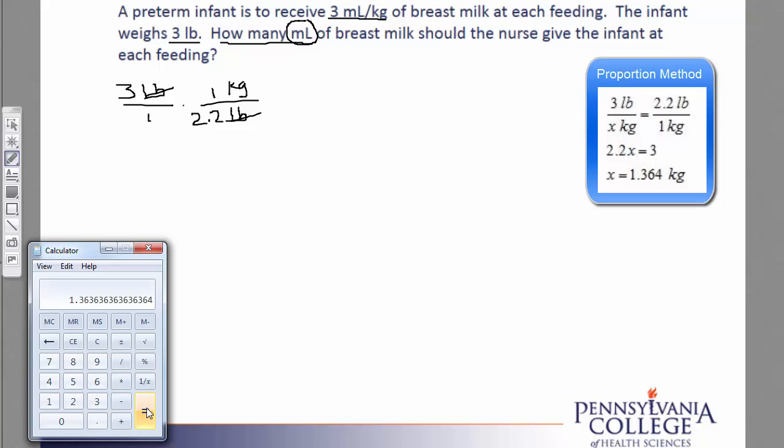Because this is under 10 kilograms, we should round it out to the thousandths place. So 1, 2, 3 decimal places, 1.364.